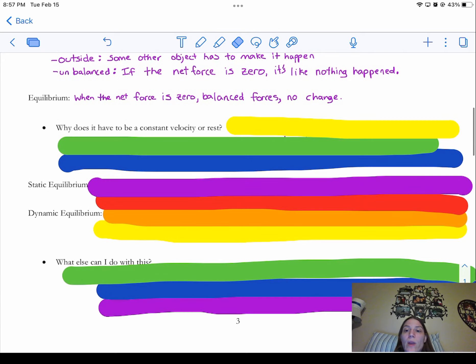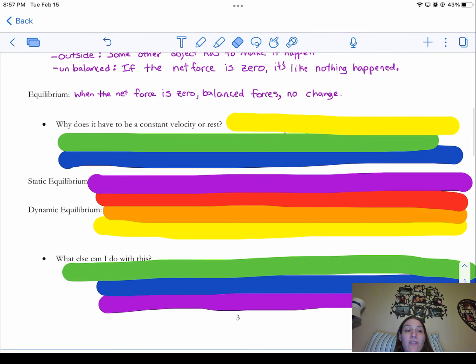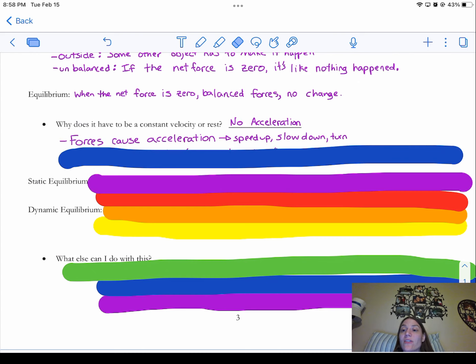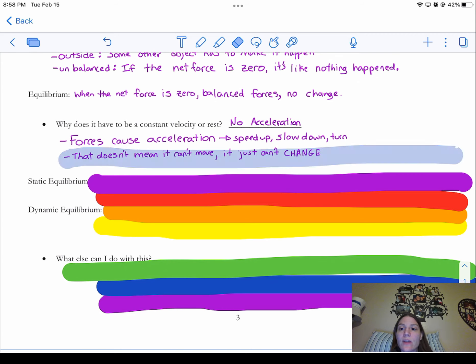Now, when we have equilibrium, why does it have to be a constant velocity or at rest? Well, that's because what we're dealing with is no acceleration. No acceleration. When we're talking about the objects that are changing, that force causes acceleration. Acceleration is when objects speed up or slow down or turn. That doesn't say anything about what they were doing to begin with, only that they can't be changing. So they could be moving, they just can't be changing. So let's connect that to the equilibrium.